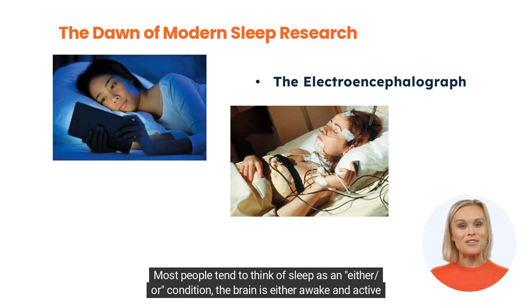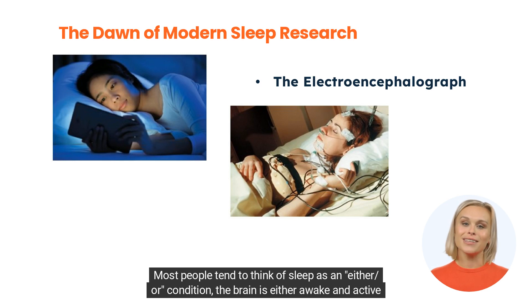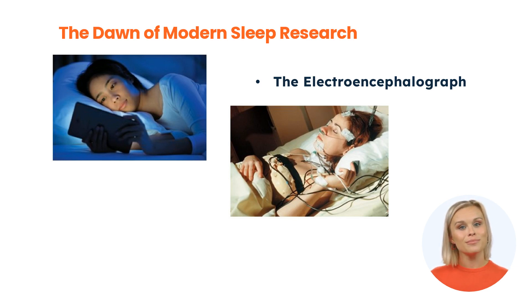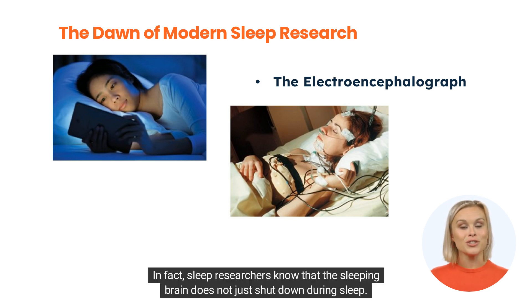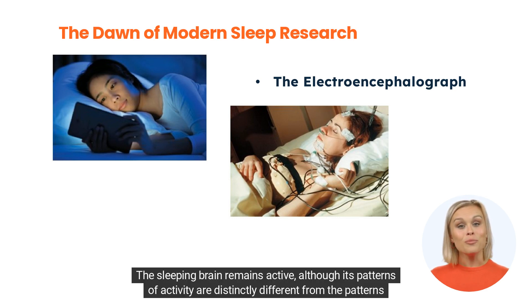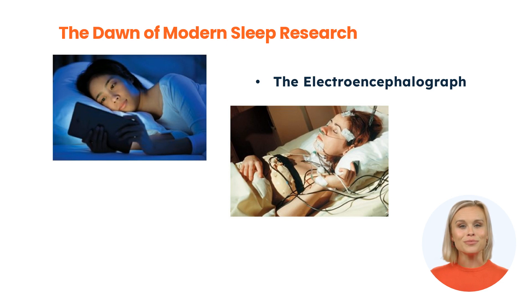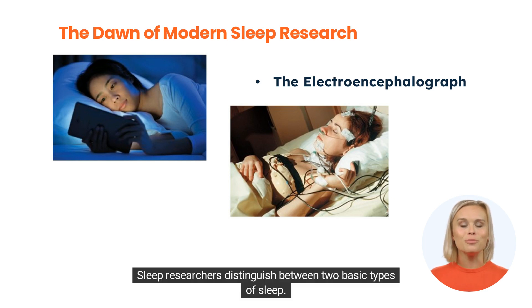Most people tend to think of sleep as an either/or condition: the brain is either awake and active, or asleep and idle. In fact, sleep researchers know that the sleeping brain does not just shut down during sleep. The sleeping brain remains active, although its patterns of activity are distinctly different from the patterns displayed by the waking brain. Sleep researchers distinguish between two basic types of sleep.